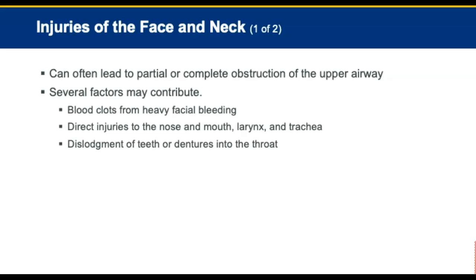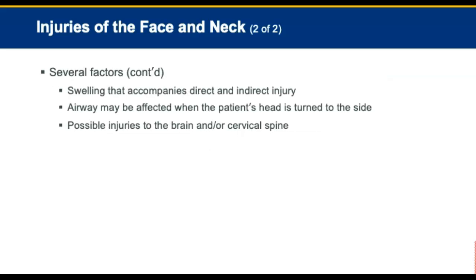Injuries to the face and neck can often lead to partial or complete obstruction of the upper airway. Several factors may contribute to the obstruction. Blood clots in the upper airway from heavy facial bleeding, or direct injuries to the nose, mouth, larynx, and trachea are often the source of significant bleeding or respiratory compromise. Injuries may cause teeth or dentures to become dislodged into the throat. Swelling that accompanies direct or indirect injury to soft tissues can also contribute to an airway obstruction. The airway may also be affected when the patient's head is turned to the side. Possible injuries to the brain and the cervical spine may interfere with normal respirations.